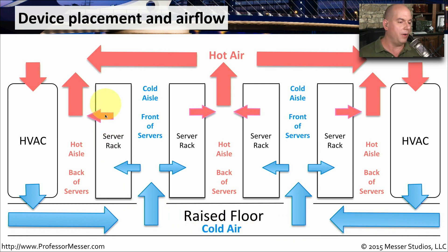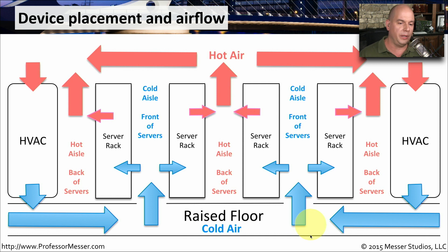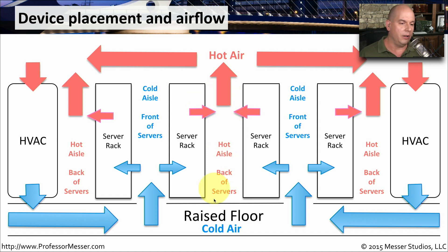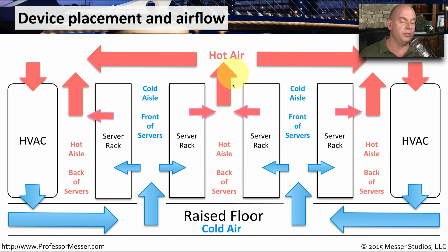Then you have all of the server racks. The server racks are designed so that cool air is being pulled in from one side of the rack, heating up that air and pushing it out to the outside of the rack. The hot aisles are connected to each other — there's a hot aisle, another hot aisle, and another. The hot air then goes to the top of the ceiling, and the entire process begins again.